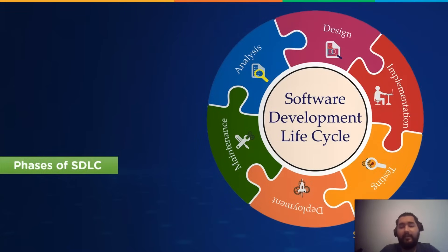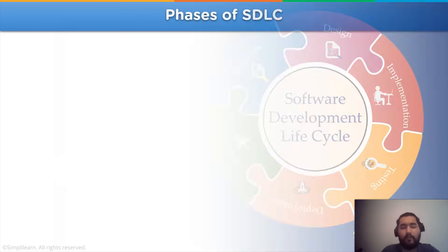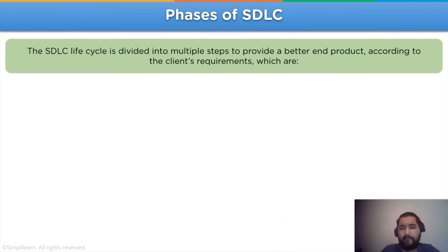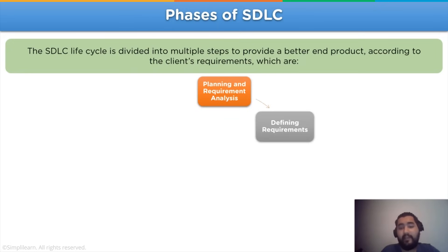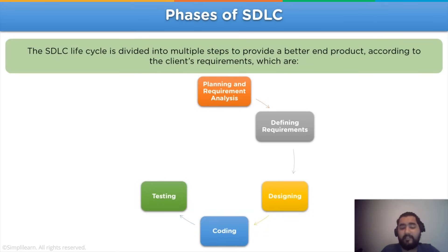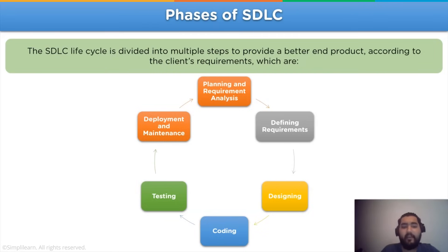Now let's move on to the different phases that involve the development of a software. The SDLC lifecycle is divided into multiple steps to provide a better end product according to the client's request. These steps are: planning and requirement analysis, where the planning and requirements are discussed with the client; defining the requirements; designing the software; coding or implementing the software; testing, where different scenarios are used to test the overall functioning; and finally deployment and maintenance, where the developed software is deployed and assessed by users to check for any errors or bugs.